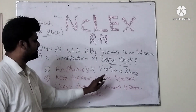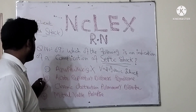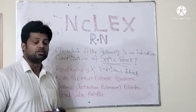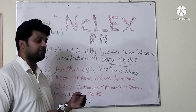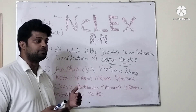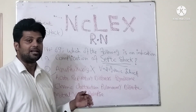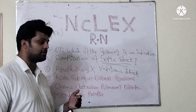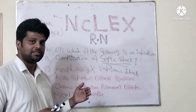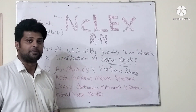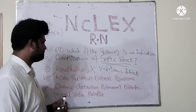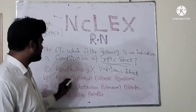Acute respiratory distress syndrome — yes, this is the right answer. Whenever a patient comes with septic shock, the first complication is acute respiratory distress syndrome. According to the manifestation, the patient has shortness of breath, the patient feels drowsiness, and distress of respiratory condition. That's why the acute condition comes in septic shock. The right answer is acute respiratory distress syndrome.